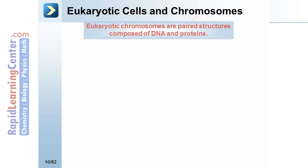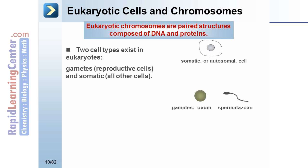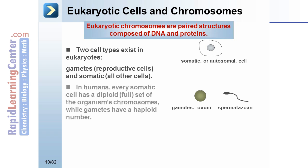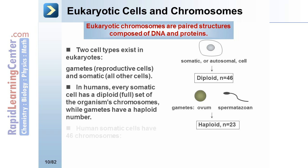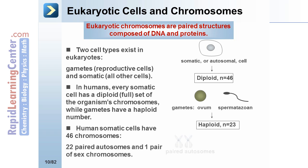Eukaryotic cells and chromosomes. Eukaryotic chromosomes are paired structures composed of DNA and proteins. Two cell types exist in eukaryotes: gametes — reproductive cells — and somatic cells, which are all other cells. In humans, every somatic cell has a diploid full set of chromosomes, while gametes have a haploid number. The diploid number is 46 and the haploid number is 23. Human somatic cells have 46 chromosomes: 22 paired autosomes and one pair of sex chromosomes, either X or Y.